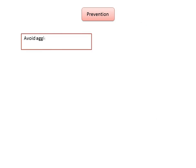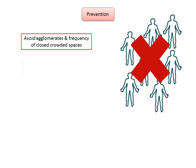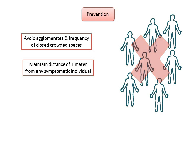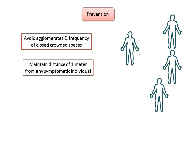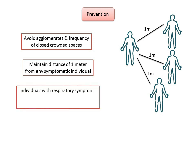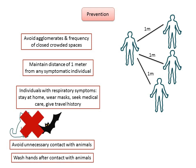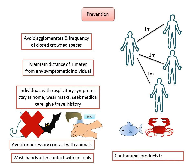To prevent transmission on a social scale, avoid agglomerations and crowded closed spaces. The virus transmits through respiratory droplets which can travel certain distances, but as a precautionary measure, maintain a distance of at least one meter from any individual with COVID-19 respiratory symptoms such as coughing or sneezing. Individuals who present with respiratory symptoms need to wear masks and seek medical care immediately. Avoid unnecessary contact with animals, wash hands after contact with animals, and cook animal products thoroughly.